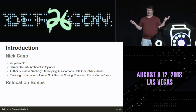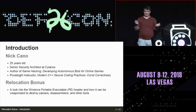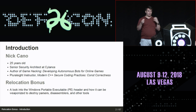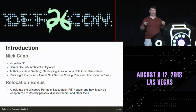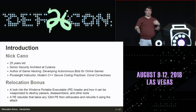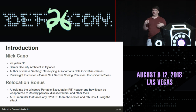What does this talk cover? In essence, it's about the Windows Portable Executable header and how it can be weaponized to destroy parsers and other static analysis tools — things like disassemblers. And that all culminates in a PE rebuilder for 32-bit Windows binaries.